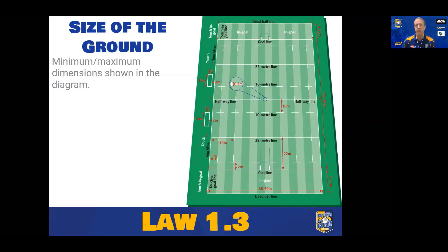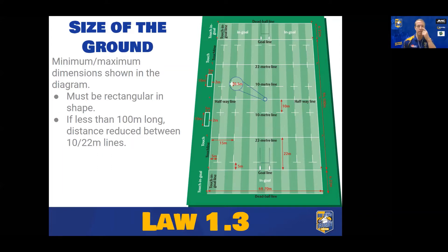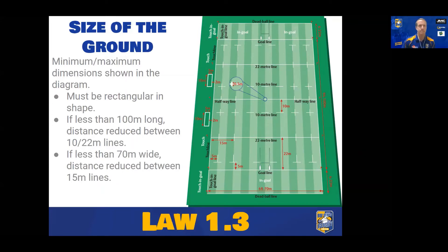Between the goal lines must be a minimum of 94 metres and a maximum of 100. The end goal areas have to be a minimum of 6 metres, with a maximum of 22 metres — you can see those massive end goal areas in older grounds. Across the field from touchline to touchline is a maximum of 70 metres, with a minimum of 68. If changes are made to length, we take it from between the 10 and 22 metre lines, as the 22 must always be 22 metres and the 10 must always be 10 metres. If reducing width, we reduce it between the 15-metre lines. The perimeter area around the outside must be at least 5 metres wide.